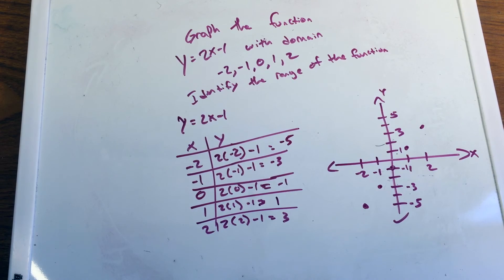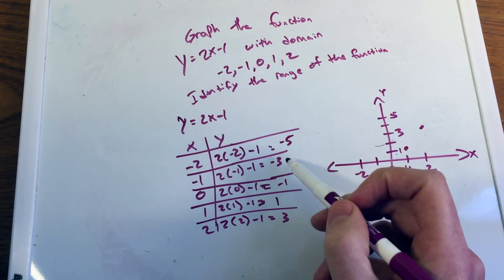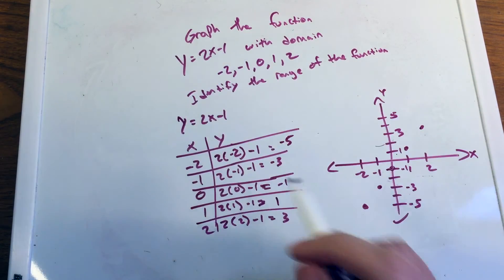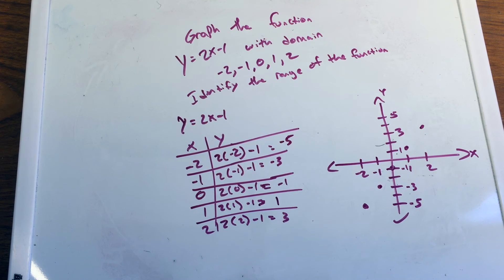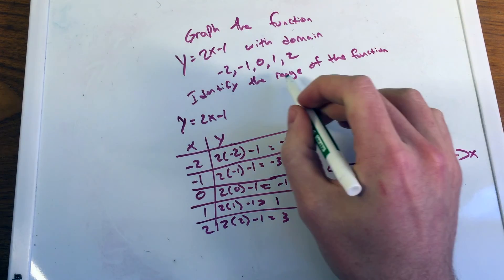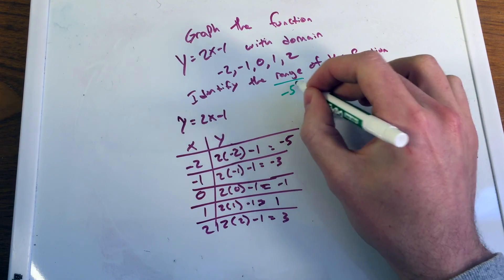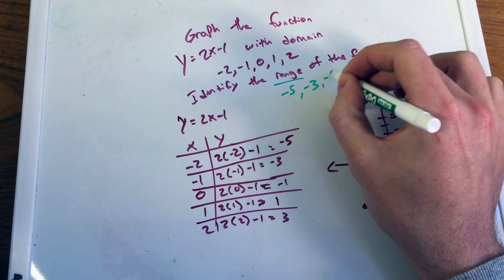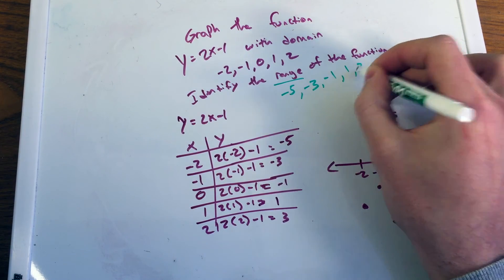And so the range of this function, the range of the function, are the values given here. So our range here, let's put that in a different color, the range of that function comes out to be negative 5, negative 3, negative 1, 1, 3.